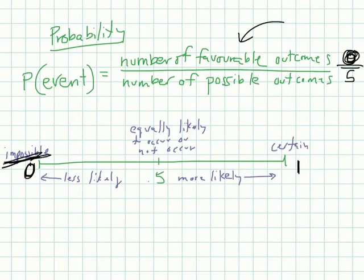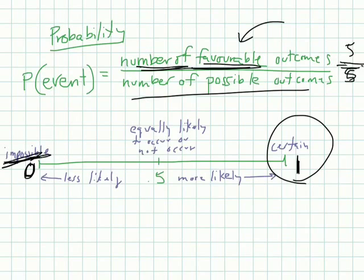Certain would be 1, meaning, out of the 5 boys, what's the possibility of drawing a boy? Well, how many boys are there? What's the number of favorable outcomes? That'd be 5. The number of possible outcomes, there's also 5 boys, and 5 divided by 5 is 1. That's 100%. It will happen. So if there's 5 boys, and the question is, what's the probability of selecting a boy? Well, there's only boys. It's certain to happen.